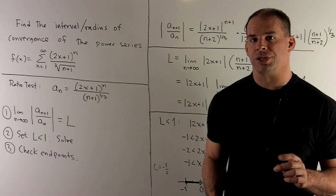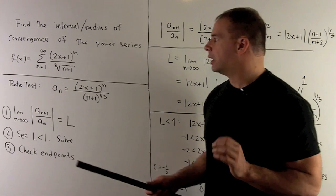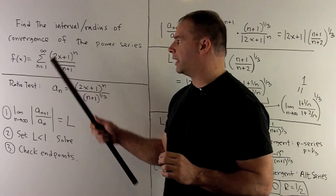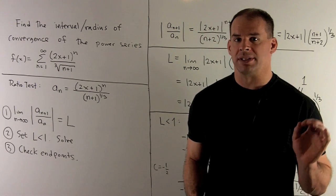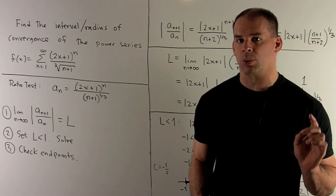Find the interval and radius of convergence of the power series. We have the sum as n goes from 1 to infinity of (2x+1) to the nth power over the cube root of (n+1).